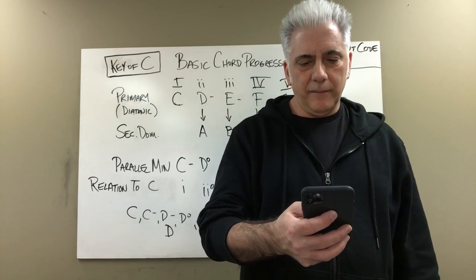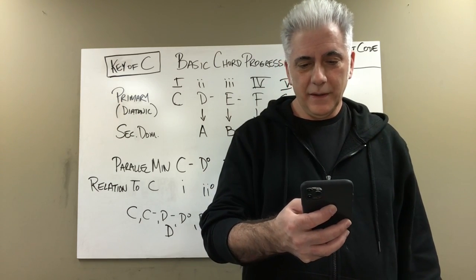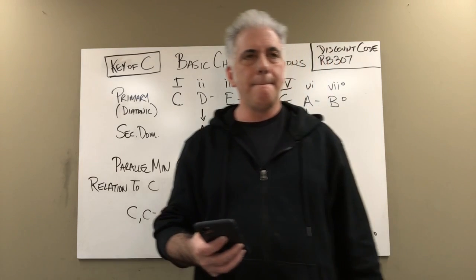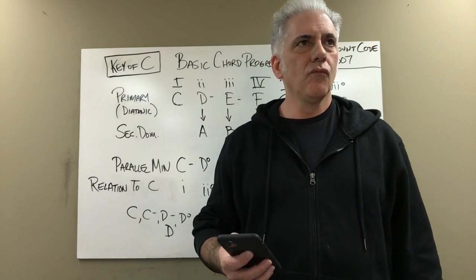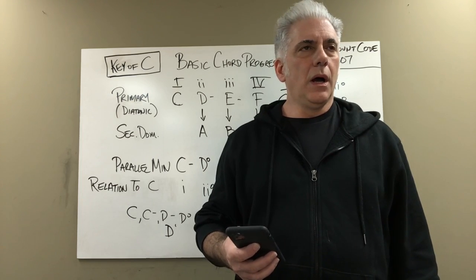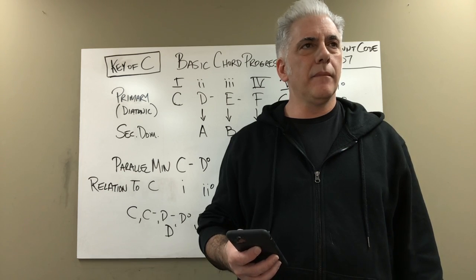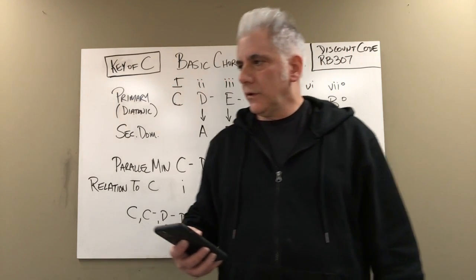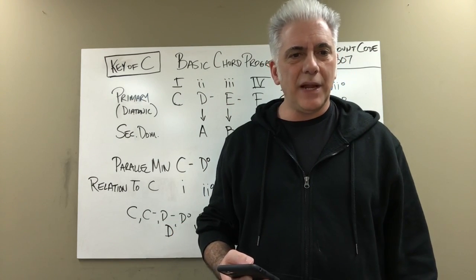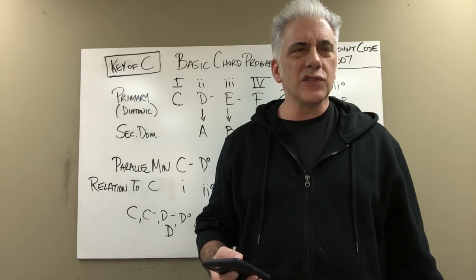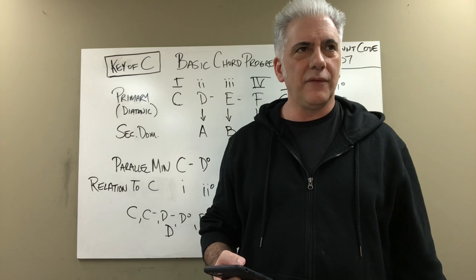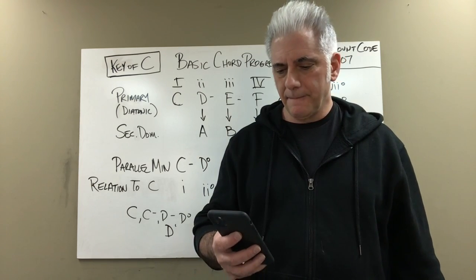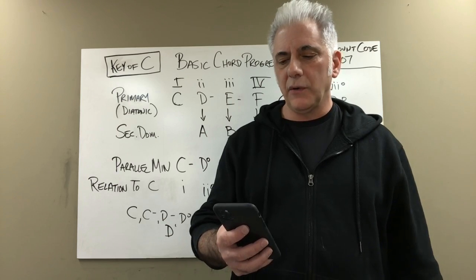Aaron has some questions from the audience. What kind of progression has the one and the flat-seven? A lot of progressions have one and flat-seven. If you're in G major you might have G, C, D, F — that's one, four, five, flat-seven. It's in so many tunes. The flat-seven chord is very common.